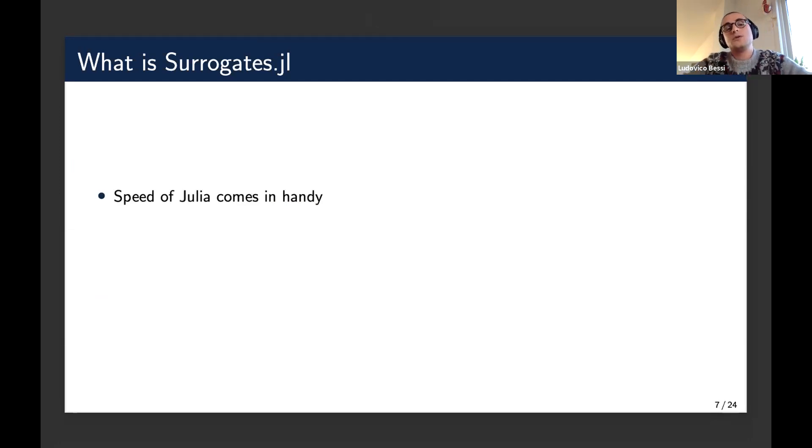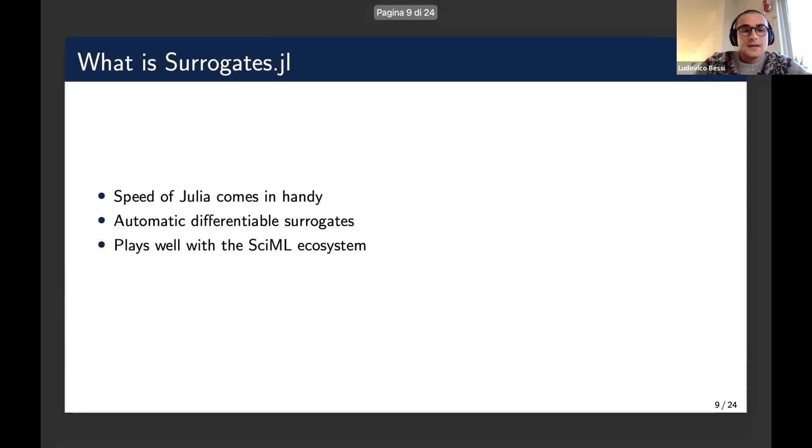Here in this kind of applications, of course, speed is important because we have huge systems that we want to approximate, so the speed of Julia comes in handy. As the title of the talk suggests, the surrogate models are actually automatically differentiable using, for example, ForwardDiff or Zygote. So this is great. And also, the surrogates.jl library is under the umbrella of the scientific machine learning ecosystem in Julia and plays well with such an ecosystem.